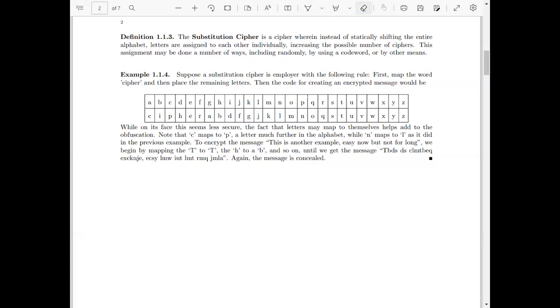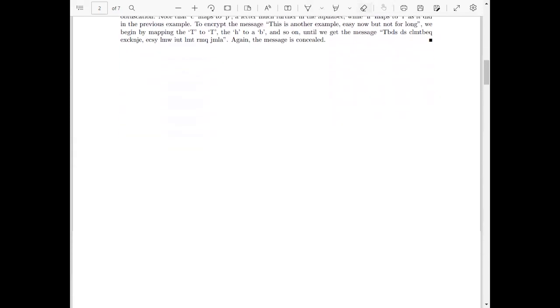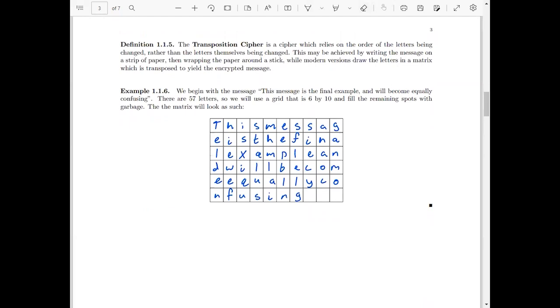So another possible solution is instead of having the letters themselves change, what if we just change the order that they're in? And so that's the general idea behind the next cipher mechanism, which is the transposition cipher. In a transposition cipher, we essentially change the letters in the way that they're ordered instead of trying to change the letters themselves. For example, we can take the message, this message is the final example, and will become equally confusing. There's 56 letters here, so we want to write this into a matrix. A nice round number close to 57 is 60, so we'll write it in a 10 by 6 matrix.